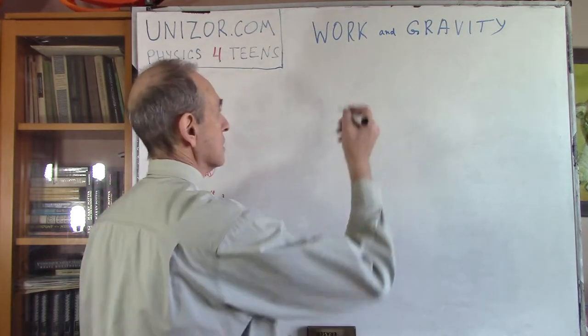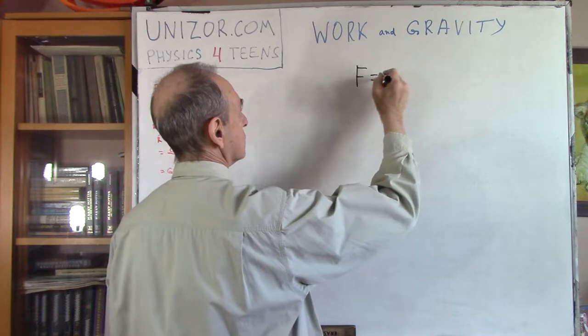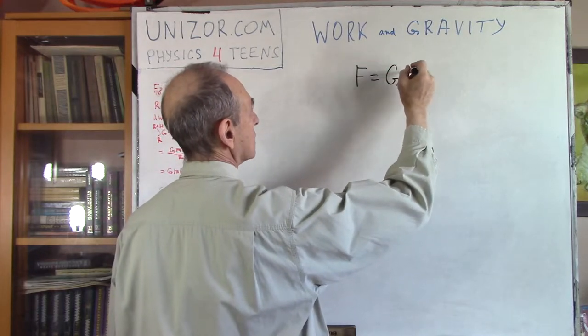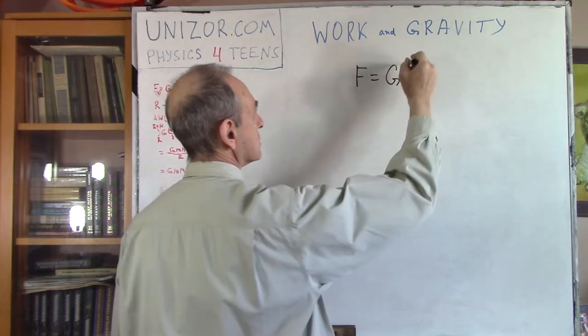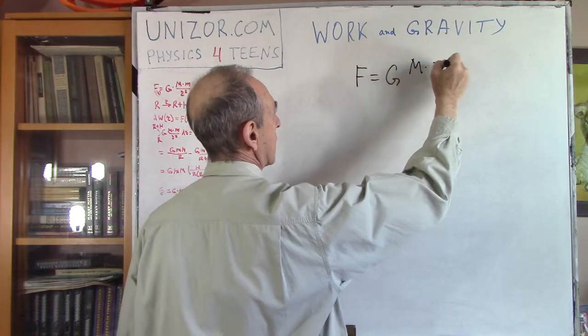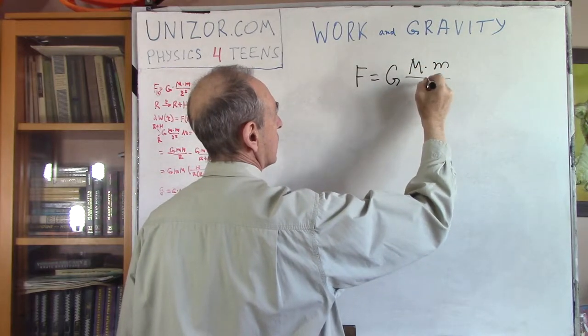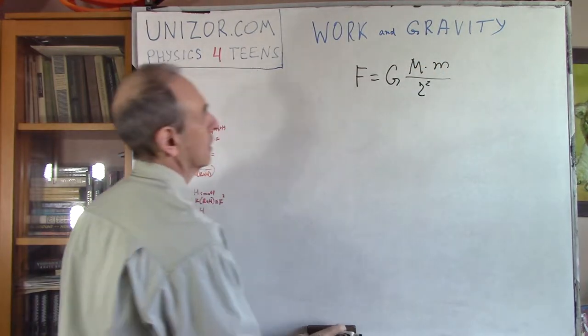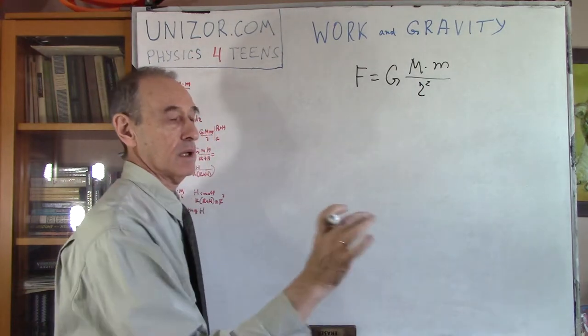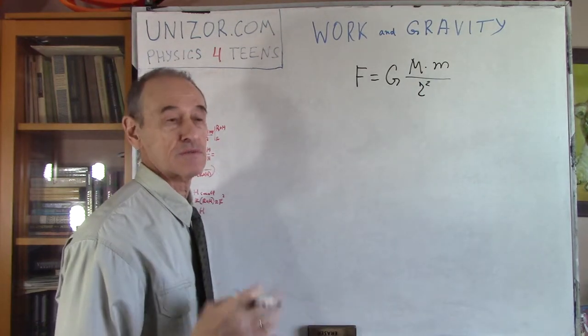So basically, the universal law of gravity tells us that the force is equal to some universal constant, gravitational constant, times two masses and divided by radius square, which is the difference between the centers of these masses.